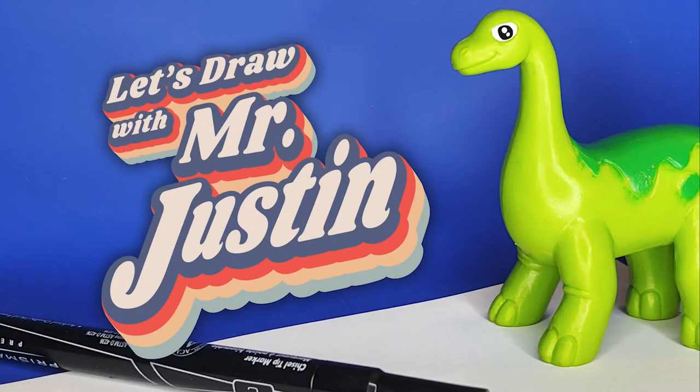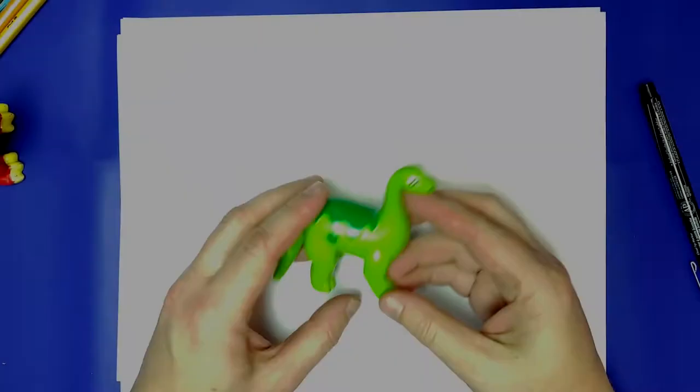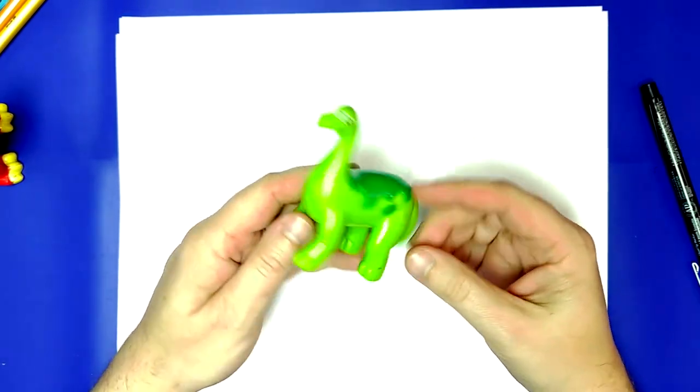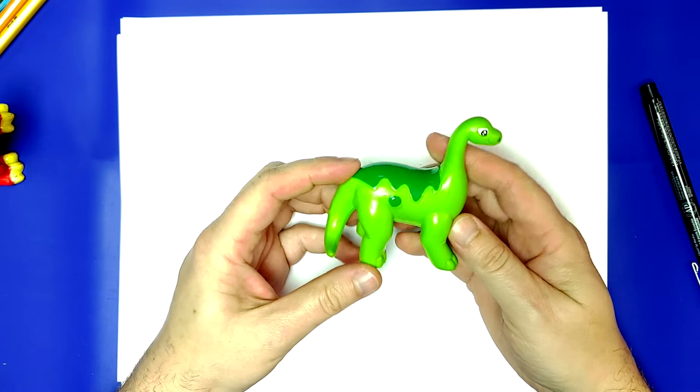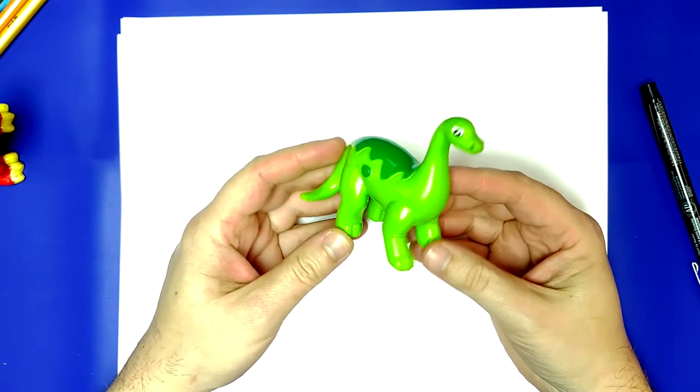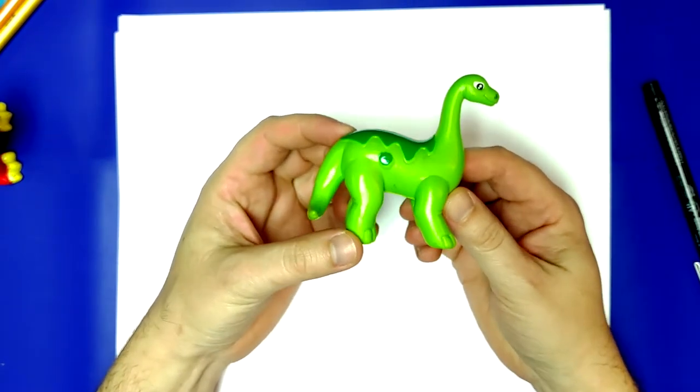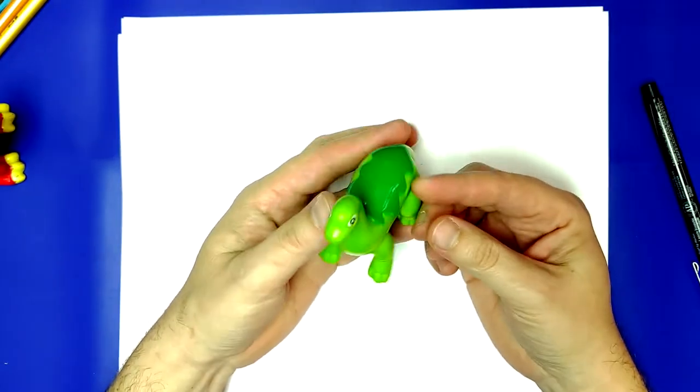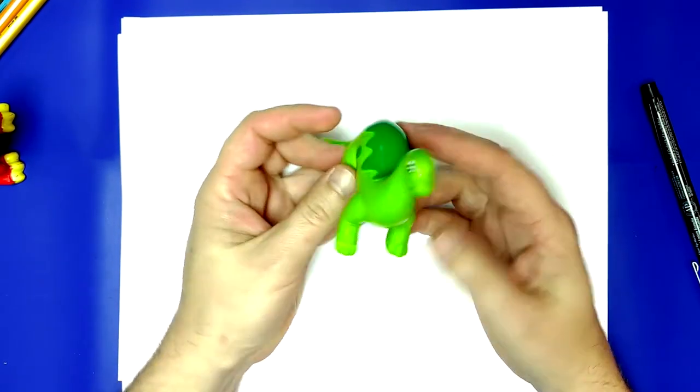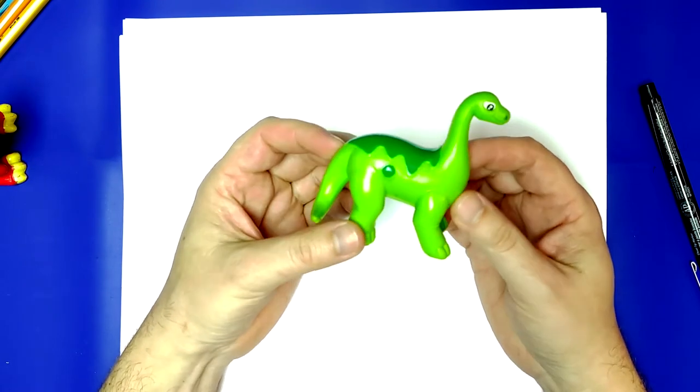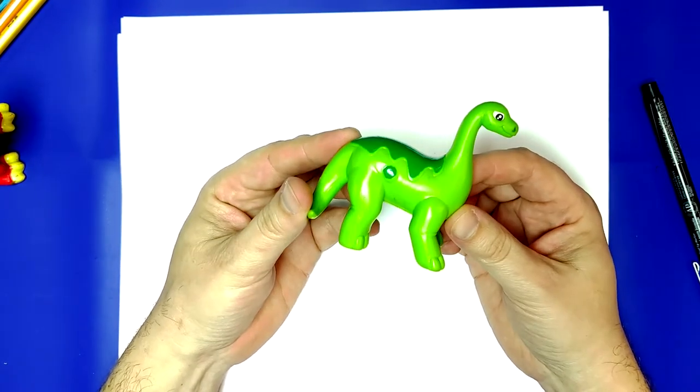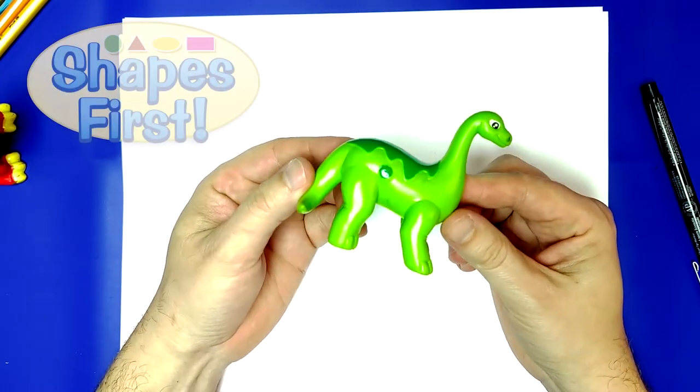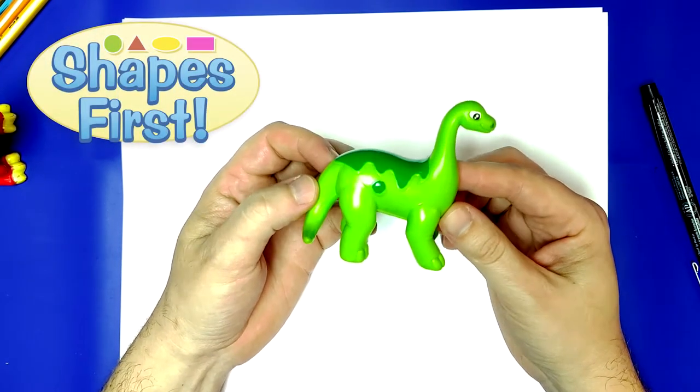Let's draw! So, I picked up this dinosaur out of my little toy box that I have, and the first thing that I want to do if I want to draw this, I want to pay attention to the shapes. I don't want to think to myself, oh my goodness, I can't draw that, that's really hard. That's not how we want to think. We can do anything we want, as long as we practice, practice, practice. So let's pay attention to the shapes before we start paying attention to the details.